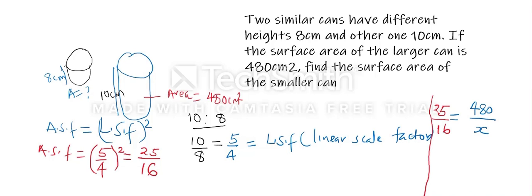From there we have to cross multiply. We get 25 multiplied by x, which is equivalent to 25x, and x is equal to 480 multiplied by 16.